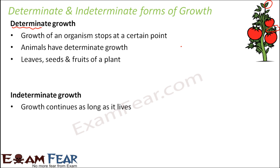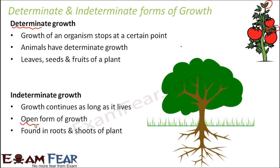Let us now talk about indeterminate growth. Here growth continues as long as the plant lives — growth will continue. It is also known as open form of growth, since it continues forever. Mostly plants show indeterminate growth, because this is found in the roots and the shoots. The roots keep on growing — the bigger the tree, the deeper the roots are. Looking at the shoot, new branches keep coming up. The roots and shoots of the plant show indeterminate growth, as a result of which the size of the plant keeps on increasing over time.